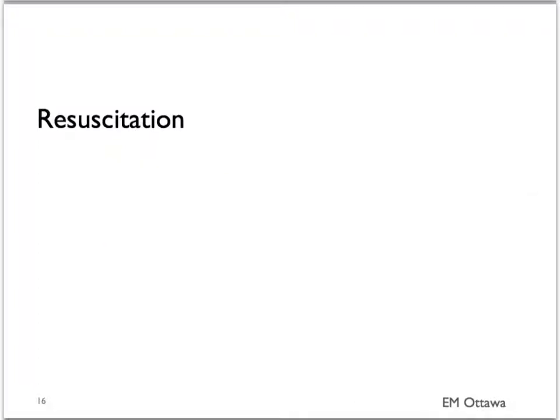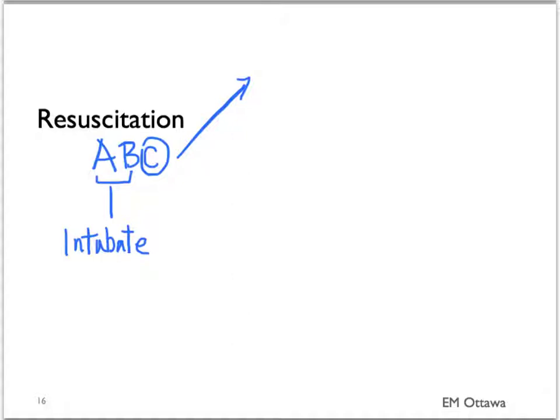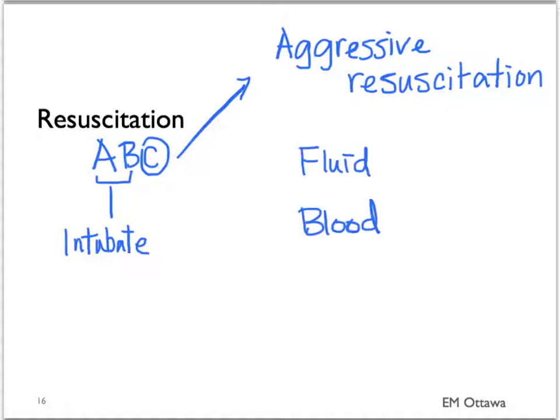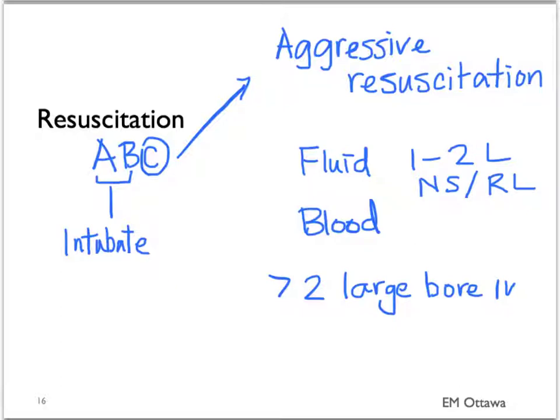Like with all emergency department resuscitation, we start with ABCs. If the patient's airway is not patent and they're not ventilating properly, you may choose to intubate them and take over their ventilation and oxygenation. The main focus will be circulation. Since the patient with a ruptured AAA will be in hemorrhagic shock, we need to aggressively resuscitate them with fluid and blood. You need at least two large-bore IVs. Usually one to two liters of crystalloids is given, and at the same time two units of blood will be given before they go to the operating room, since we expect them to have bled significantly internally.